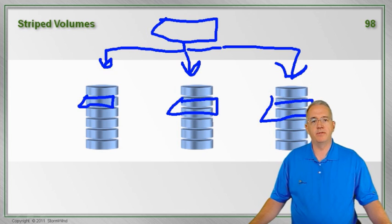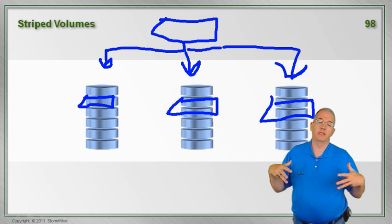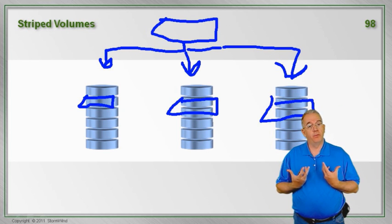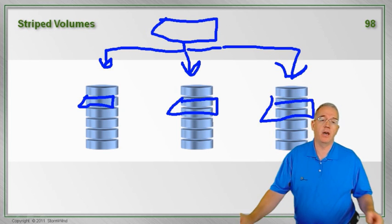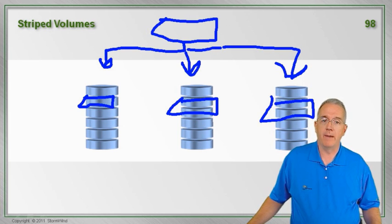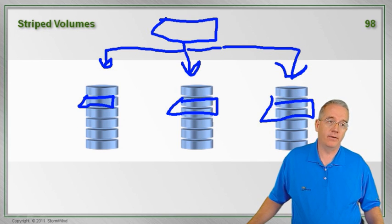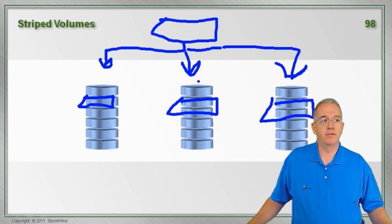So now I have a little chunk here and a little chunk here and a little chunk here. The advantage of a stripe set is it's really fast because I can write to multiple drives at the same time and I can read from multiple drives at the same time. You see a lot of stripe sets for things like video capture or video playback because it is just that fast. Very, very quick.